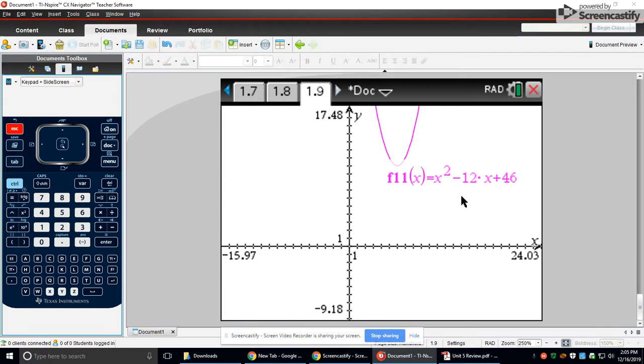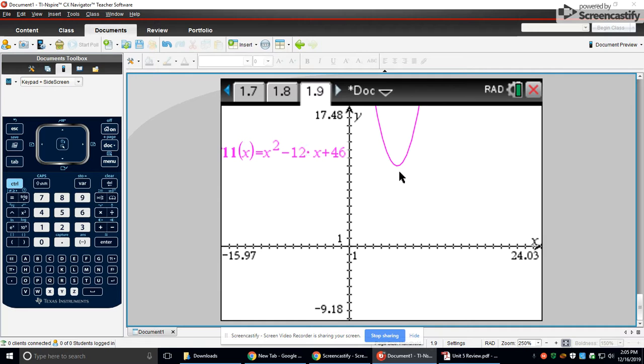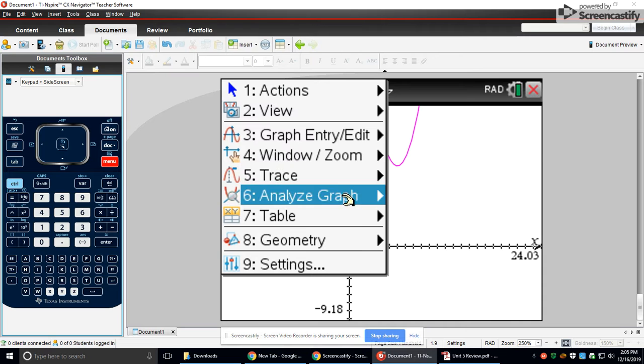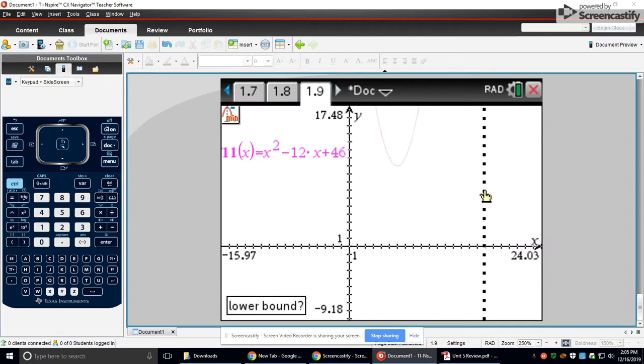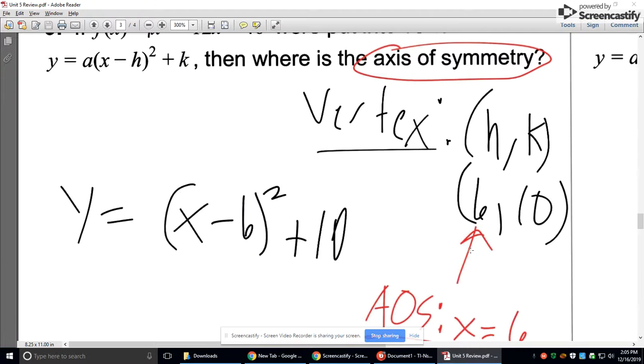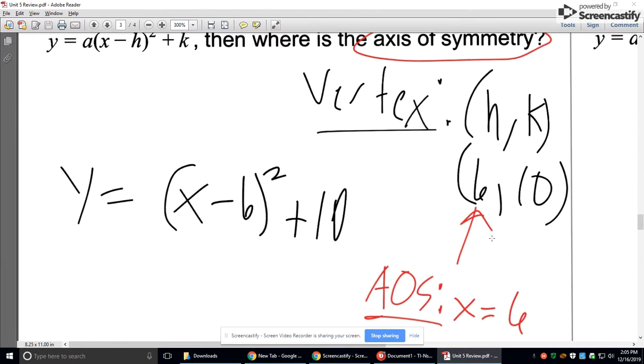And then this is, we need to look for the vertex. So is this the max or the min? Is this the highest or lowest point? This is the lowest point of the graph. So I'm going to go to analyze minimum. Click, highlight, click. So 6, 10 is my vertex. The axis of symmetry runs through the x coordinate of the vertex. It always runs through the vertex.